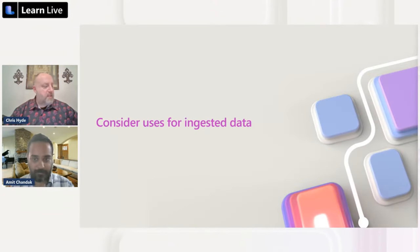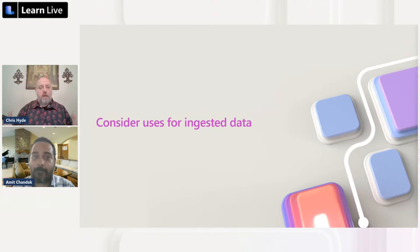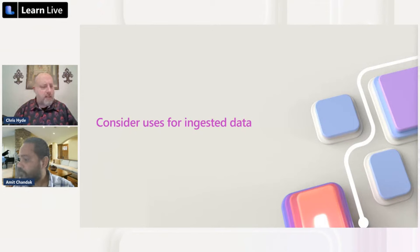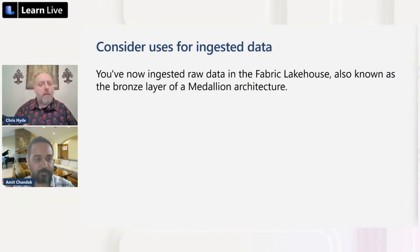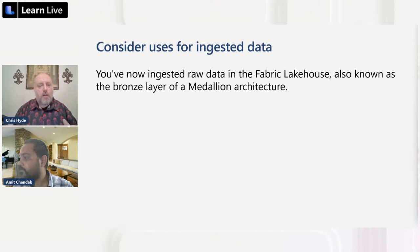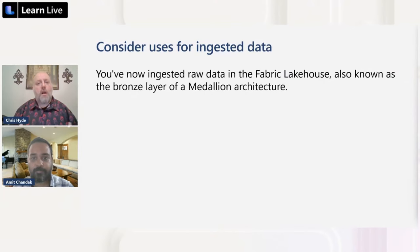We've just seen how to ingest data into the bronze layer of our lakehouse. That term 'bronze layer' refers to a paradigm called medallion architecture. Our raw data first goes into the bronze layer - the staging layer. Then we do some transforms to turn that into the silver layer, which is data appropriate for use across the whole enterprise. Then further transforms - structuring data into a star schema, making it easy for reporting and analytics - creates our gold layer.